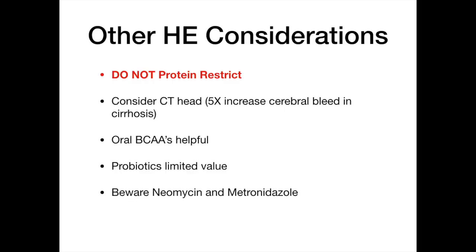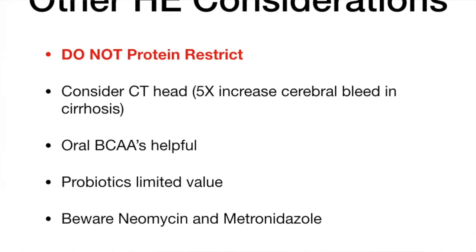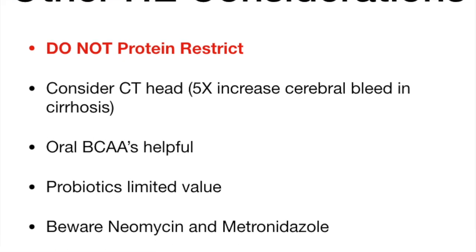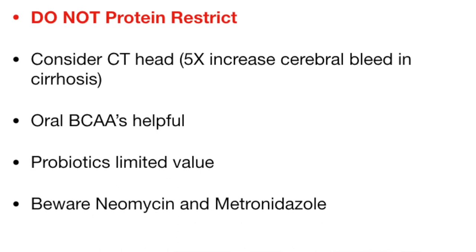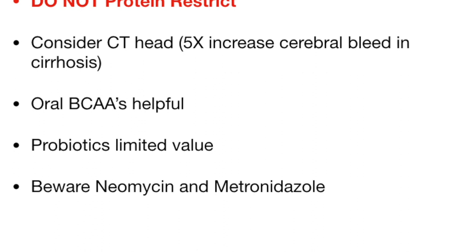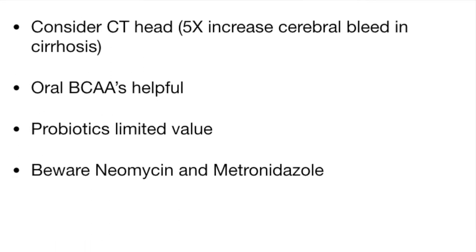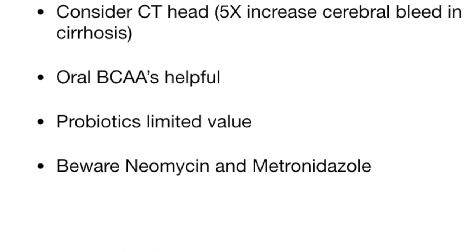A few things that confuse caretakers regarding hepatic encephalopathy: number one, there is no value in restricting protein — these patients are already malnourished. Depending on the clinical situation, consider a head CT scan because these patients have a five times greater chance of having a bleed in their head. Branch-chain amino acids have shown research benefit. There is really no direct benefit using probiotics. And beware of neomycin and metronidazole because of the potential nephrotoxicity.